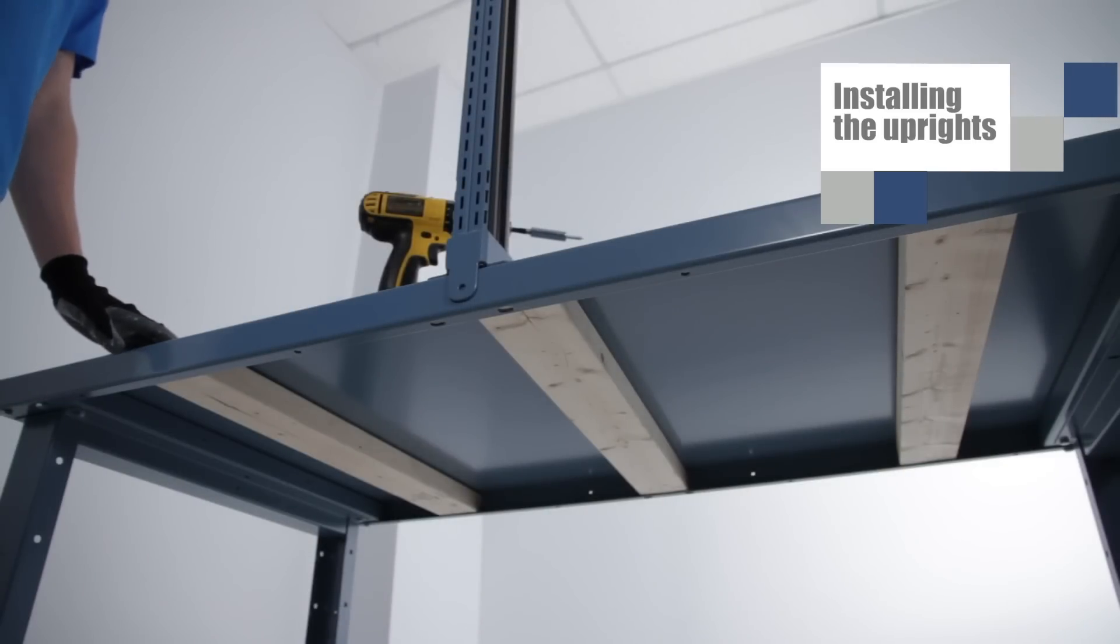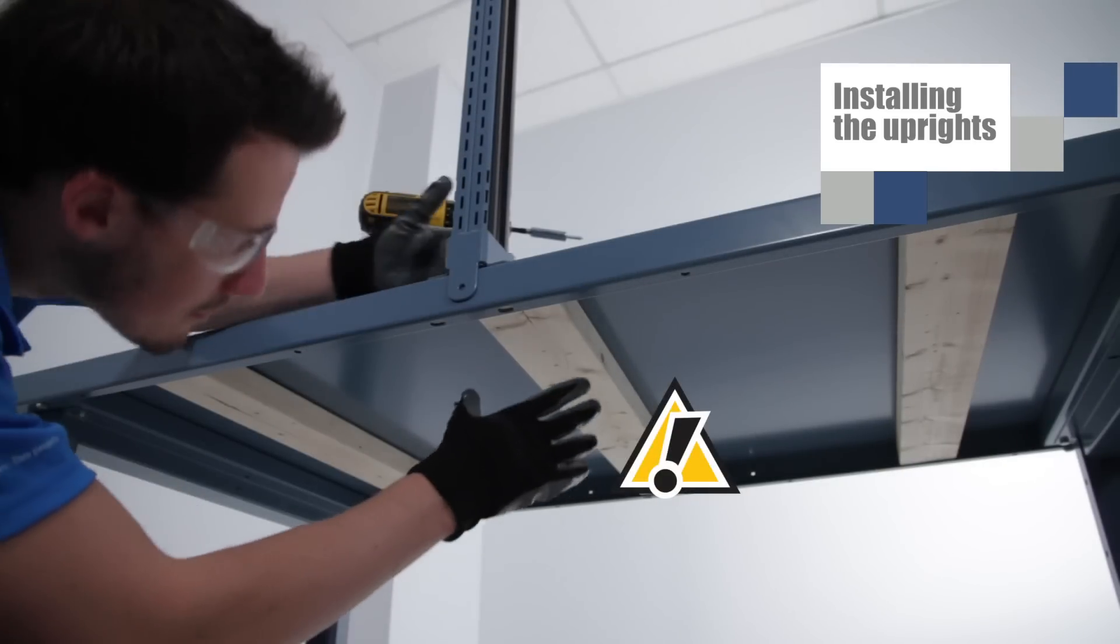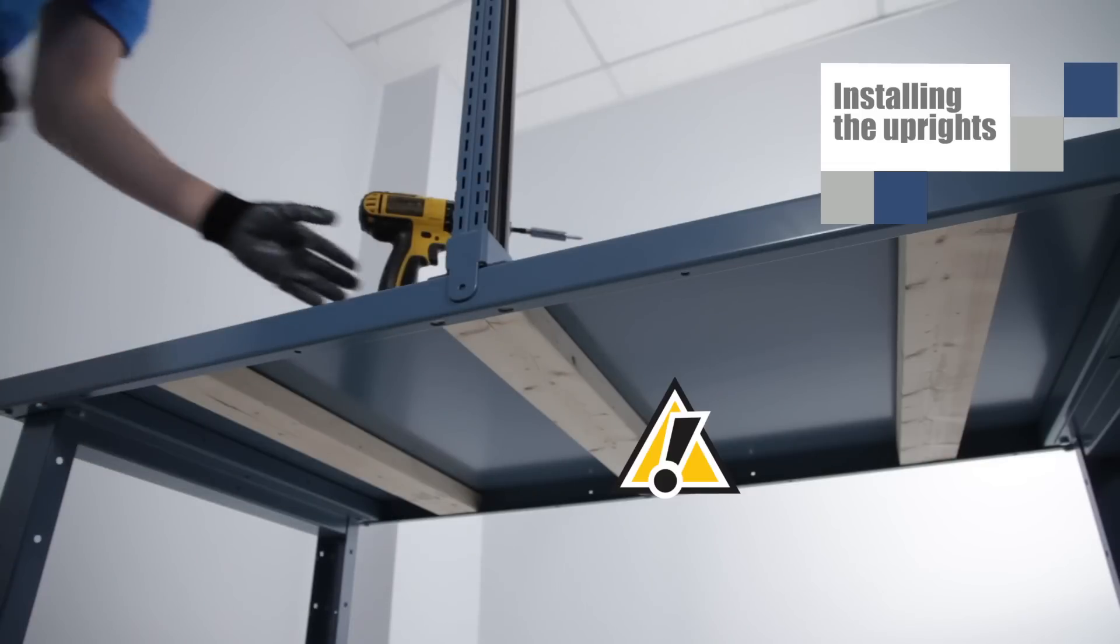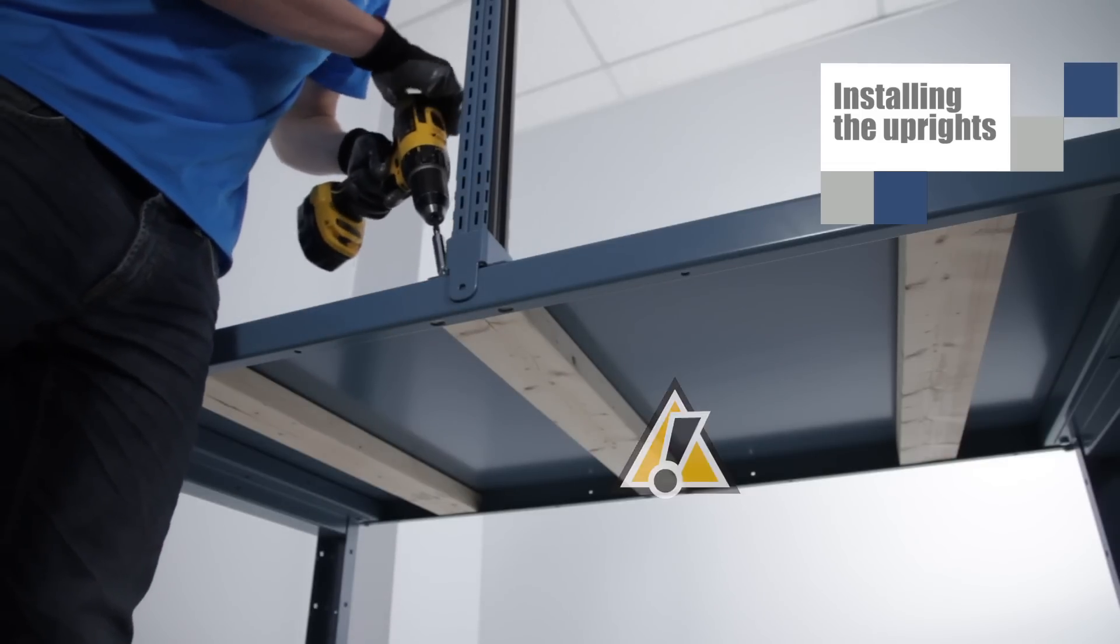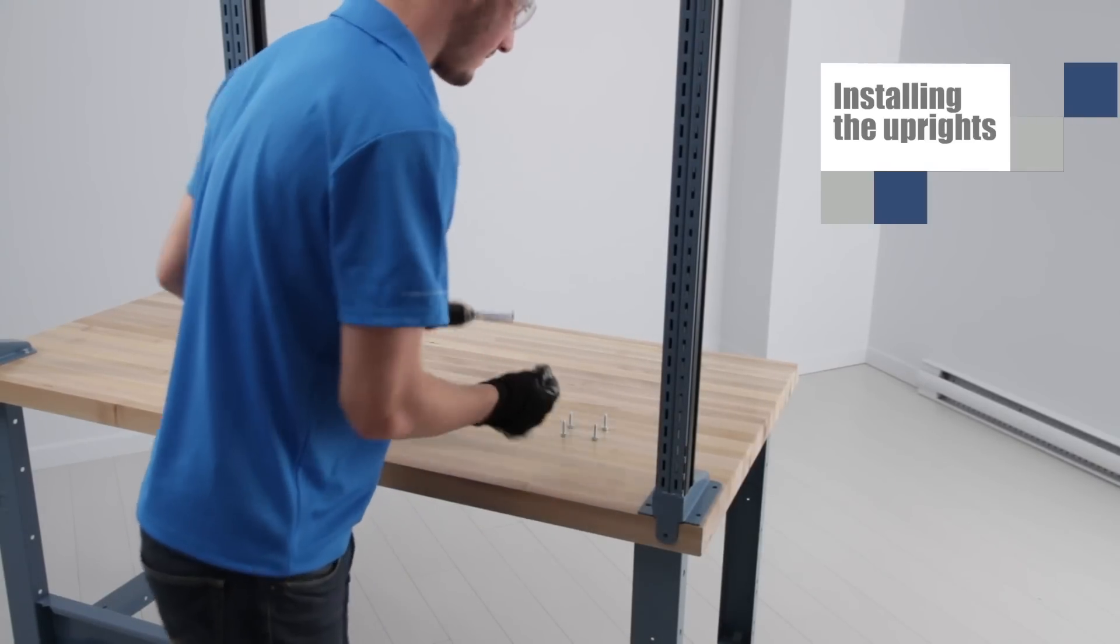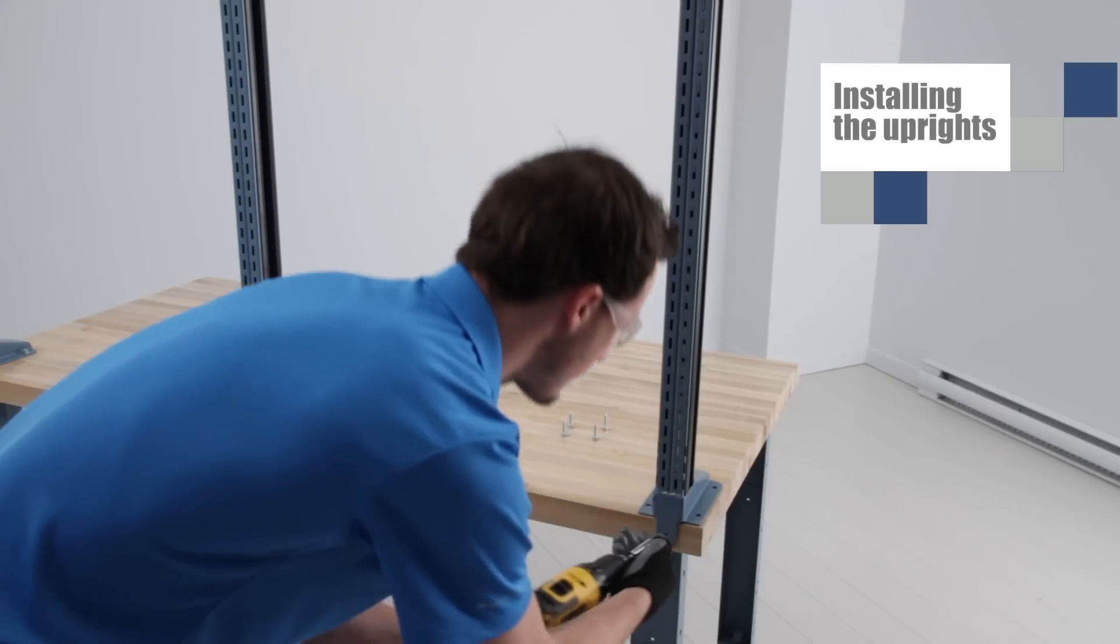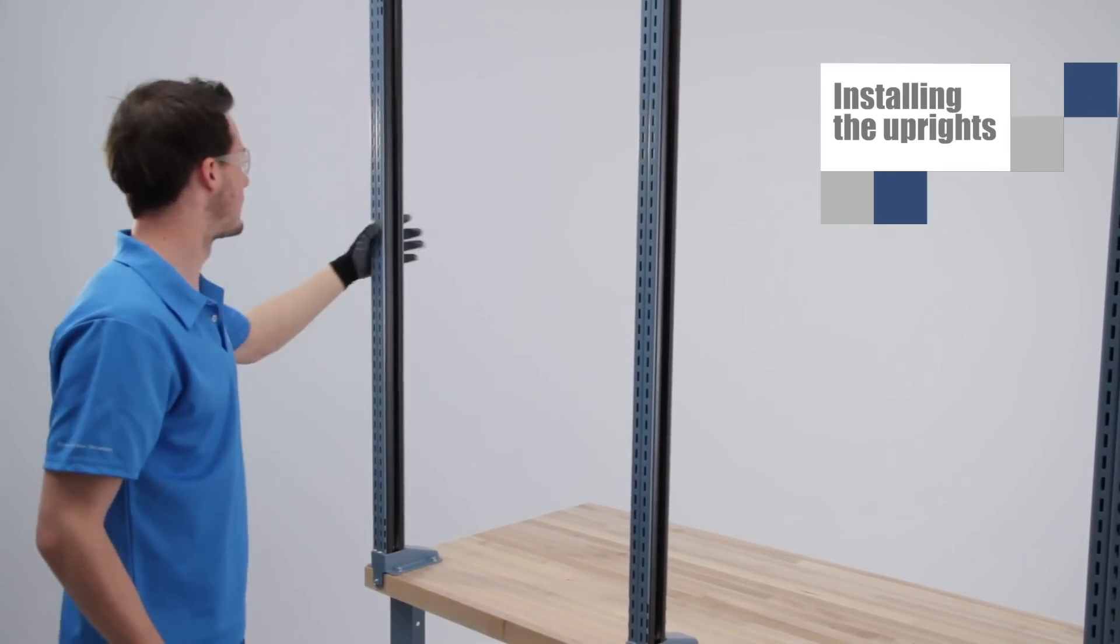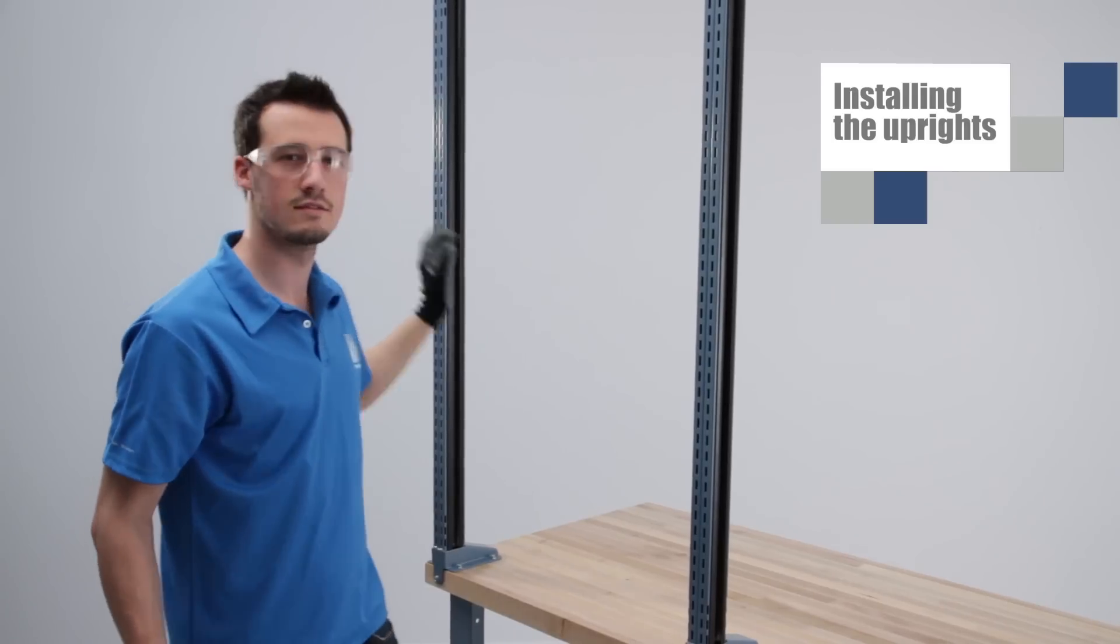In the case of a steel top, you must use wood reinforcers under the uprights that are not installed directly above a leg. This will provide rigidity when your accessories will be installed on the frame. Be sure that everything is stable and no screws are missing before moving on to the next step.